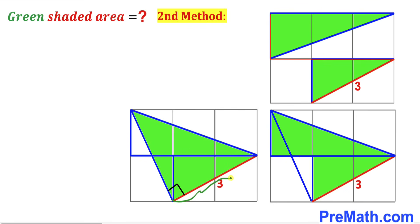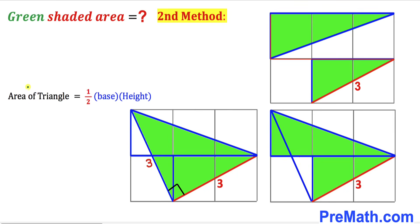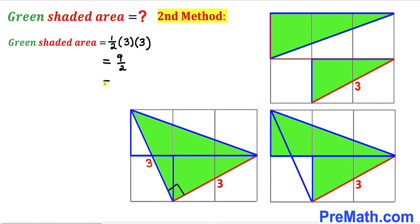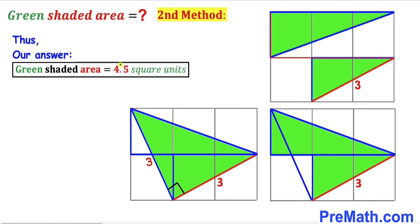Since this side length is three units, this other side length is three units as well. Now let's calculate the area of this green shaded triangle using the area formula: one-half times base times height. The base is 3 and the height is 3, so the area equals one-half times 3 times 3, which equals 4.5 square units. The area of the green shaded region turns out to be 4.5 square units using the second method as well.